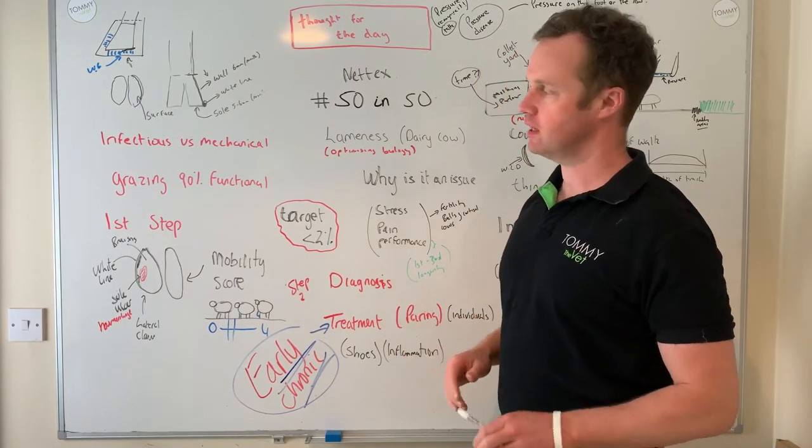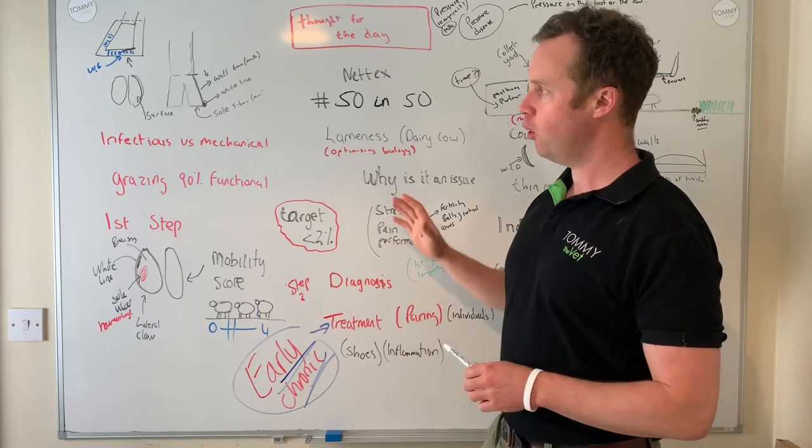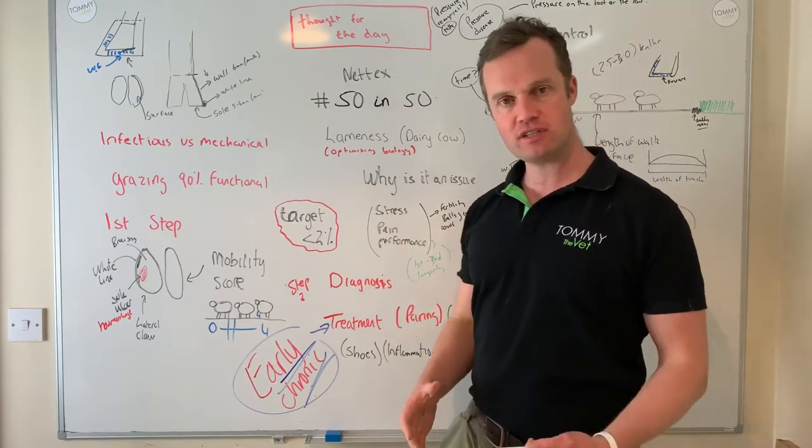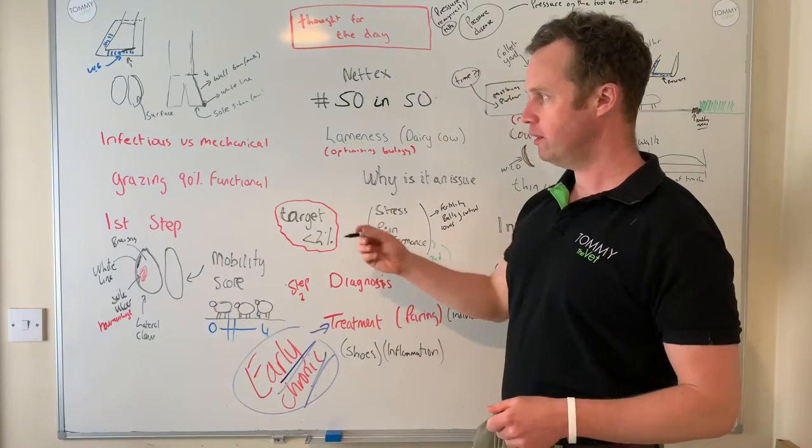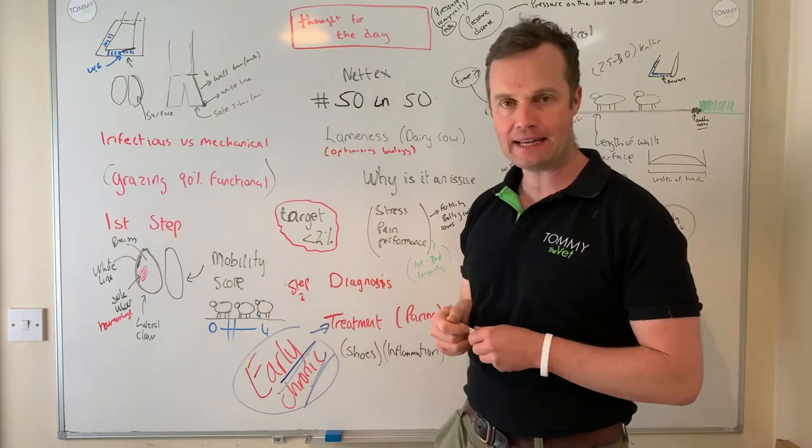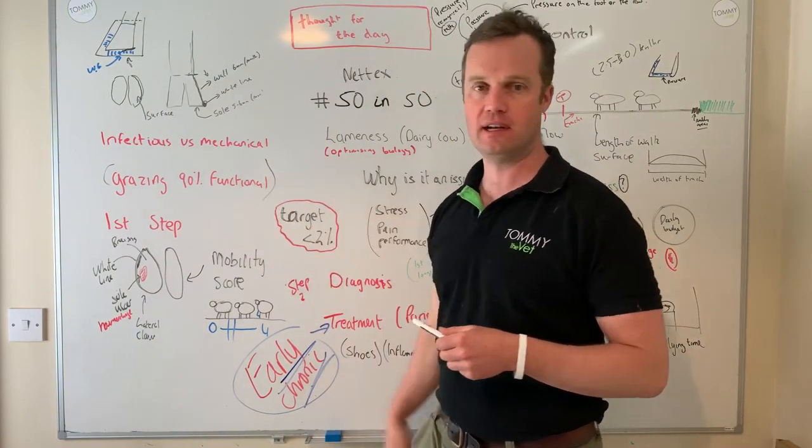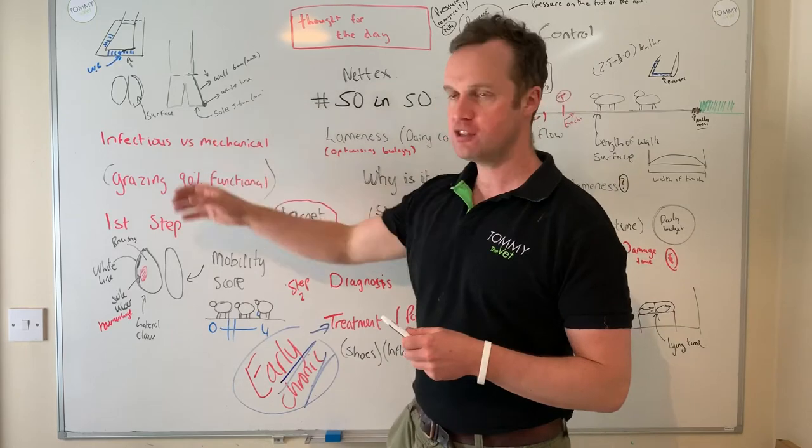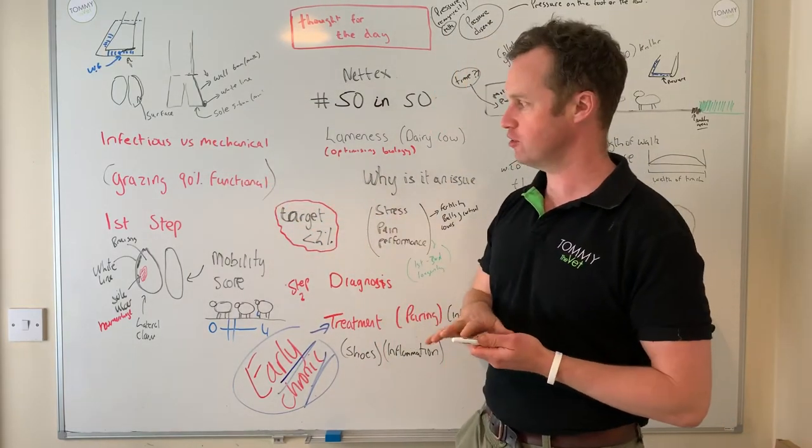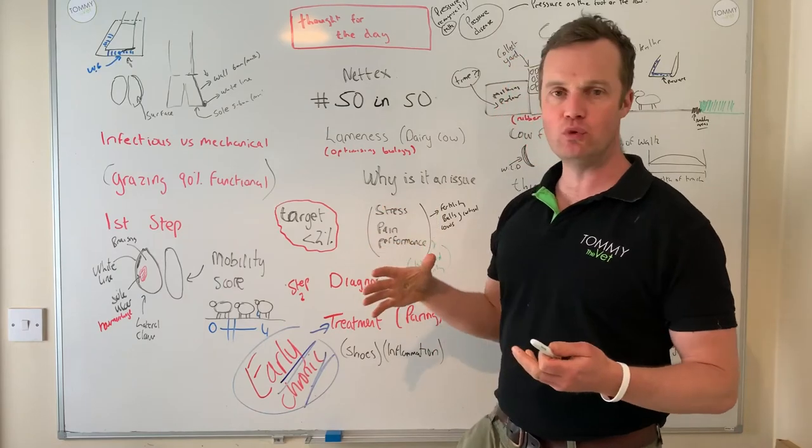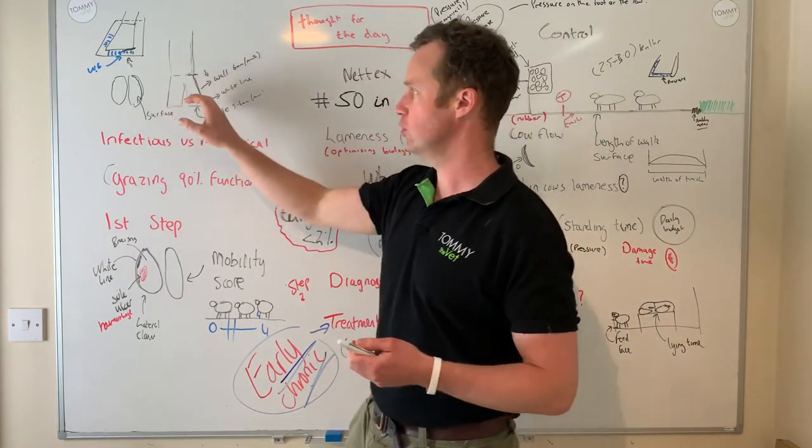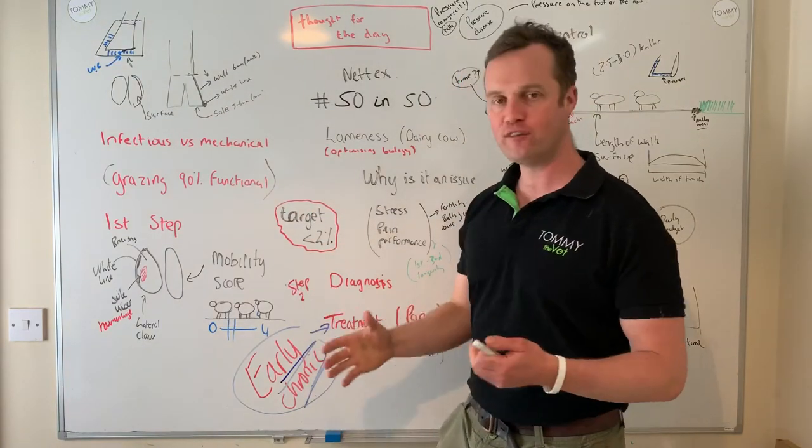When we talk about lameness it can be infectious lameness or mechanical lameness. When we're out grazing at the moment, typically a lot of lameness is functional or mechanical lameness, which accounts for 90% of the lameness. Functional mechanical lameness relates to the surface. What we've got to do is if we know that this is a sensitive tissue here, the sole, the white line, we have to understand.